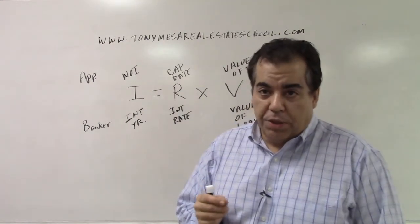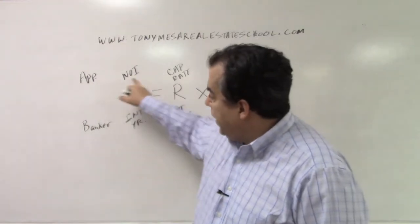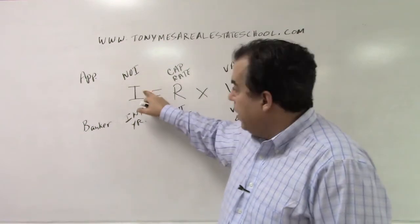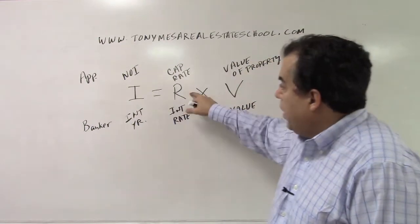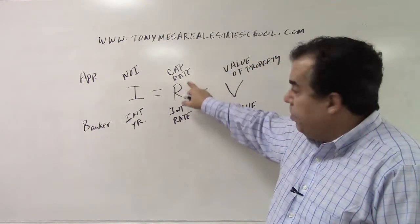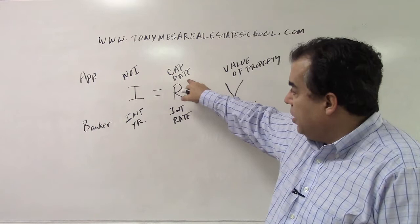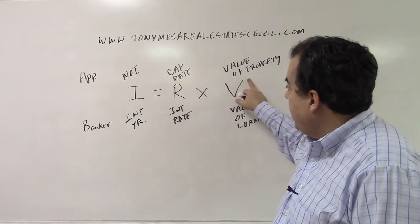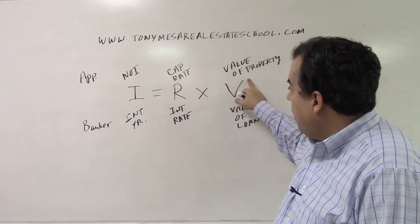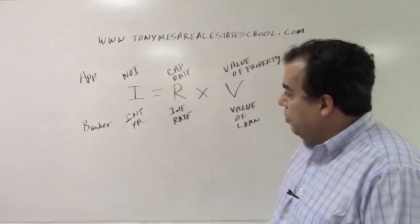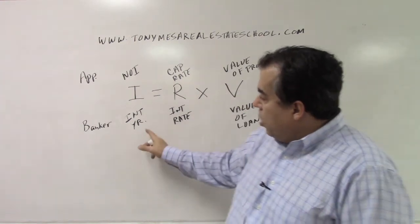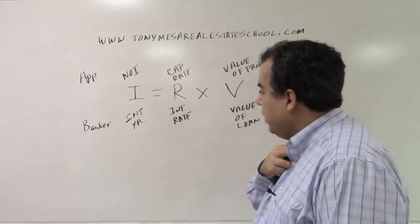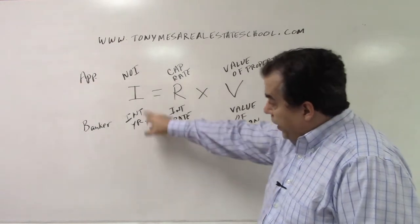For Irv the Appraiser: the I is the net operating income (NOI), the R is the cap rate — and remember, you have to use the cap rate as a decimal number, not a percentage — and the V is the value of the property.